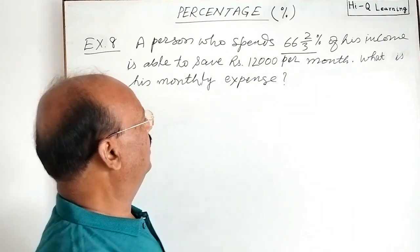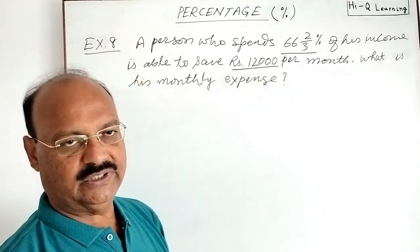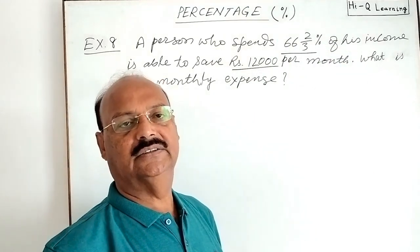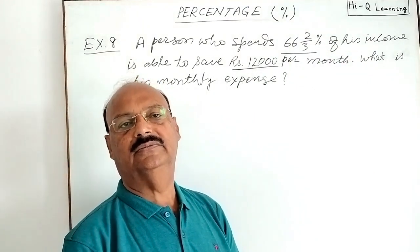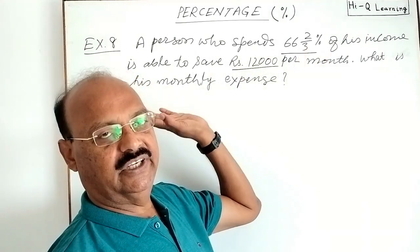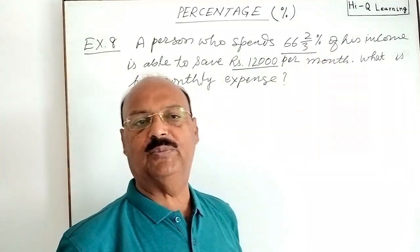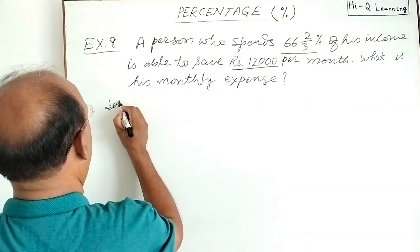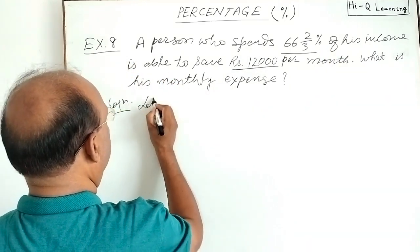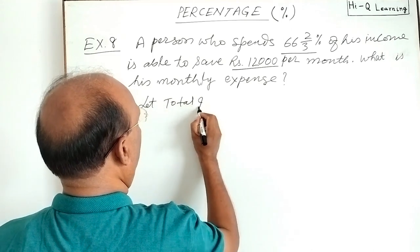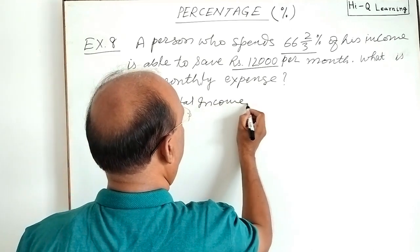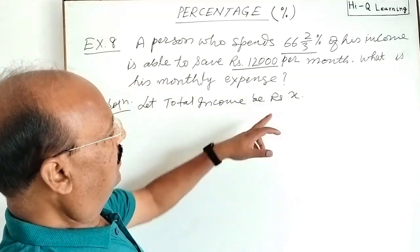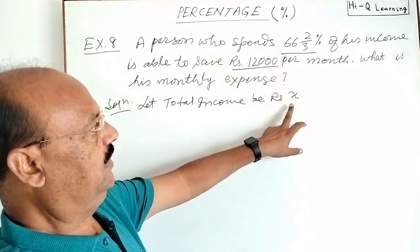As you know, expenditure is always calculated with respect to total income, but total income is not given here. So first of all we will suppose that total income is X. Let us see the position here. Let total income be rupees X, so expenditure will be calculated on X.